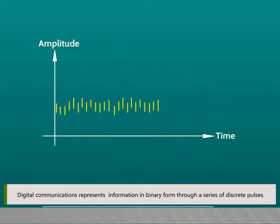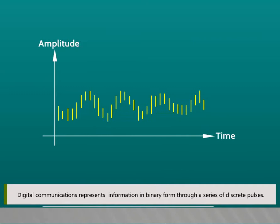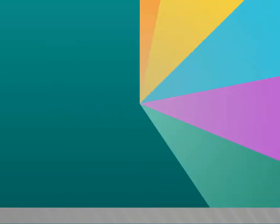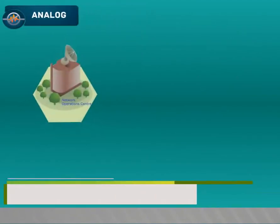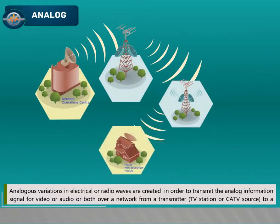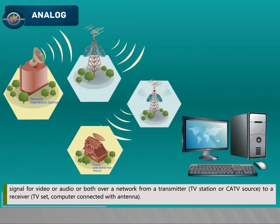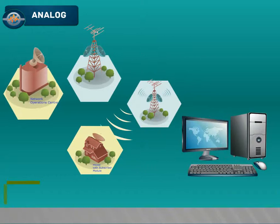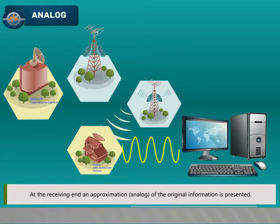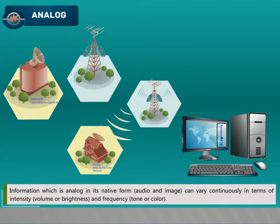Digital communications represents information in binary form through a series of discrete pulses. Analog variations in electrical or radio waves are created to transmit the analog information signal for video or audio or both over the network, from a transmitter (TV station or CATV source) to a receiver (TV set, computer connected with antenna). Information which is analog in its native form, such as audio and image, can vary continuously in terms of intensity (volume or brightness) and frequency (tone or color).